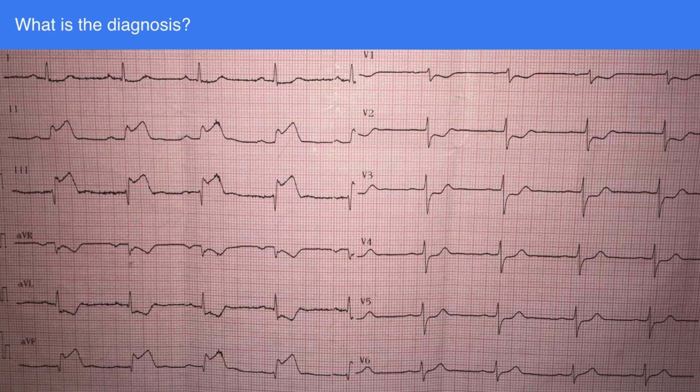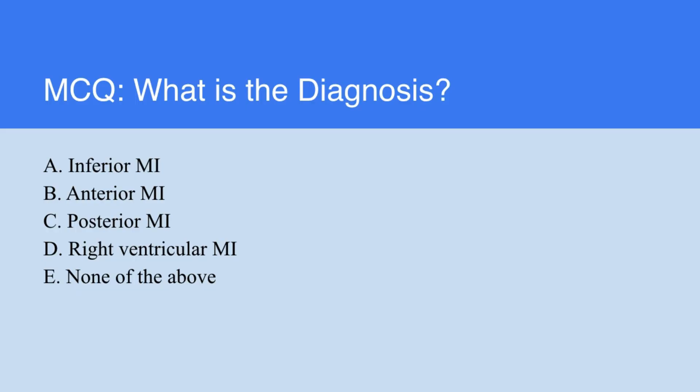When the question comes up, asking whether it is inferior myocardial infarction, anterior, posterior, right ventricular infarction, or none of the above — the right answer is A, inferior myocardial infarction, because the ST segment elevation is in leads 2, 3, and AVF.